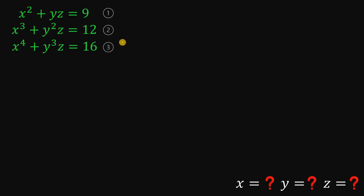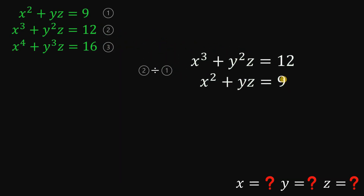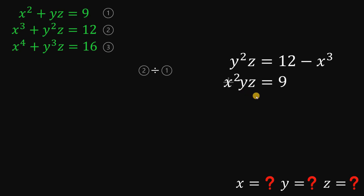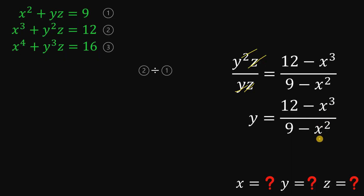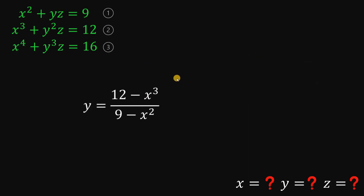Now, to solve this, what we're going to do is first eliminate one of its variables to have an equation with two variables only. To do that, we will use equation 2 and equation 1 — divide equation 2 by equation 1. We subtract x cubed on both sides for the second equation and x squared on both sides for the first. Dividing these two equations, we eliminate the variable z. Since y squared over y is just y, we get that y equals 12 minus x cubed over 9 minus x squared. We call this equation 4.